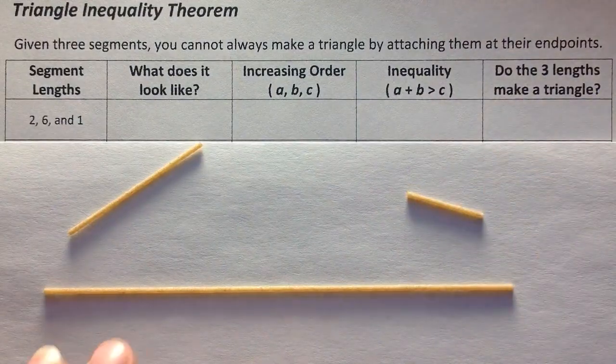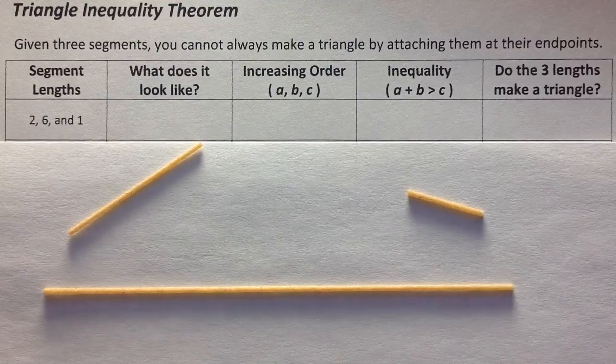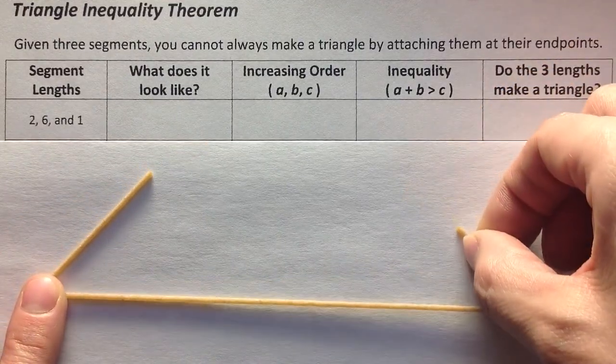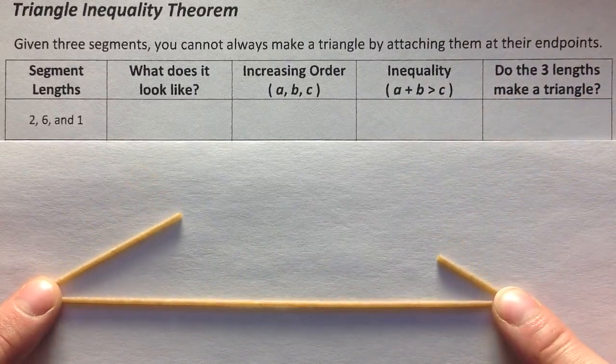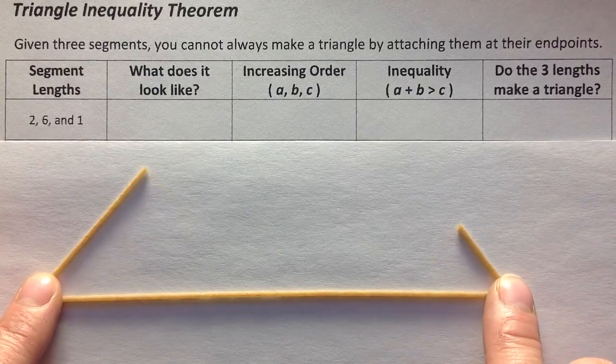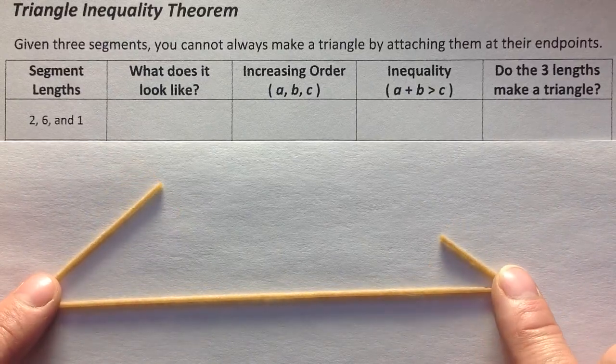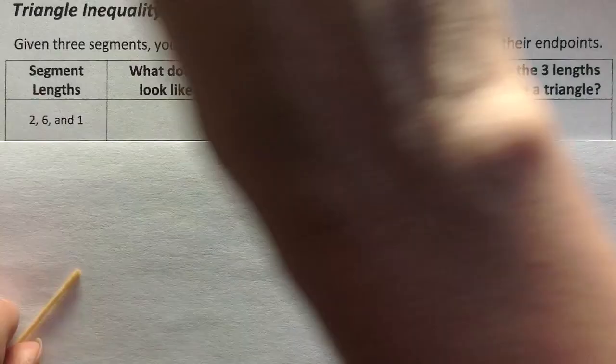And what we're going to do is lay the longest one down first. That's what I'm always picturing in my head when I'm doing these. And we're going to attach the two shorter sides to the endpoints of that long side and think about whether or not they're going to reach. So as you can see, 2 and 1 were definitely too small to reach across 6 inches. So we're not going to be able to make a triangle out of that.